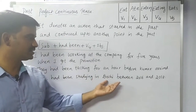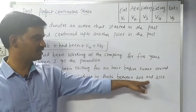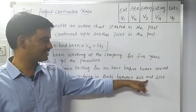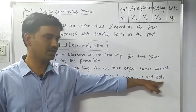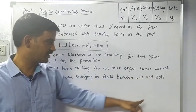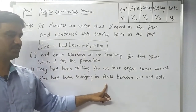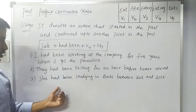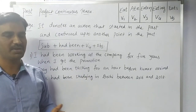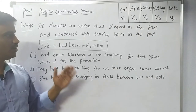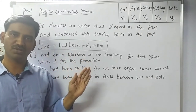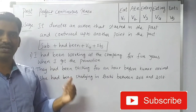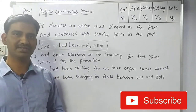So we may have questions about this in the exam. Between 2016 and 2018, she was studying in Delhi — that is the start and continuation. This is how Past Perfect Continuous Tense works.